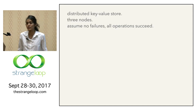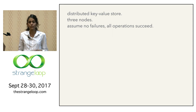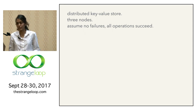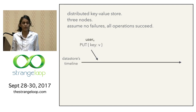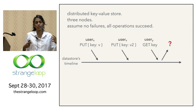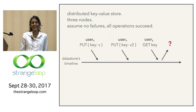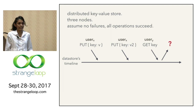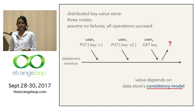Say we have a simple distributed key-value store with three nodes, and we assume there are no failures and all our operations succeed. I come along and put key equal to V. A few seconds later, I change my mind and put key equal to V2. Then you come along and perform a get for key. What value do you get? It's V2, right? The final value depends on the consistency model of the data store.